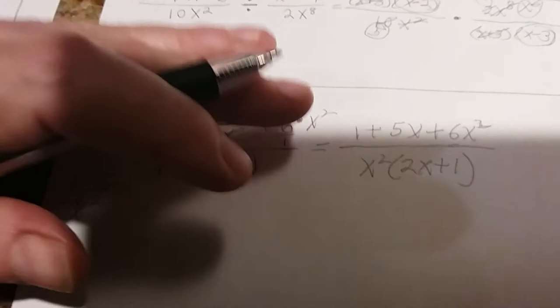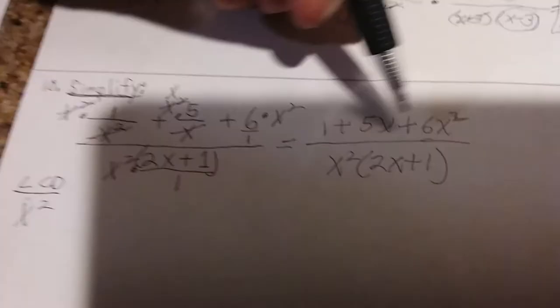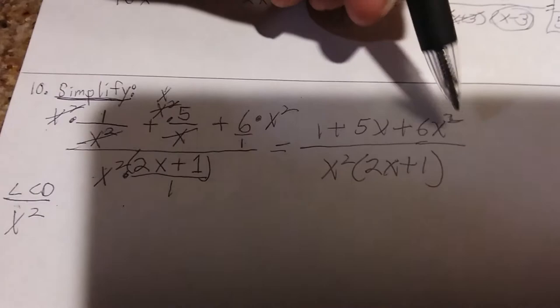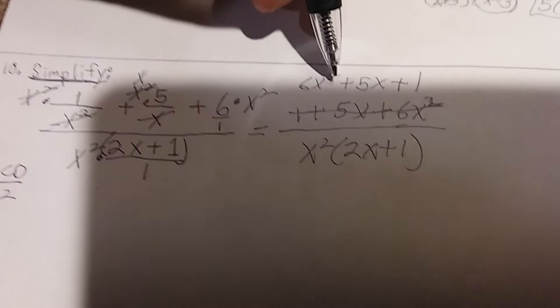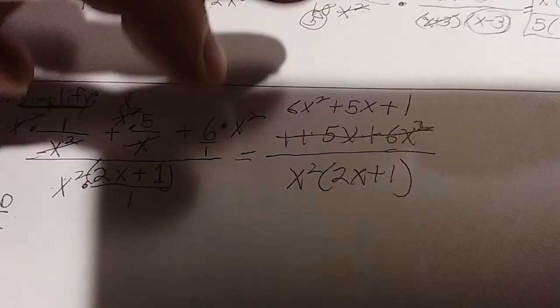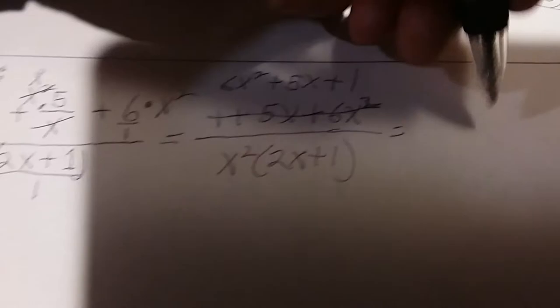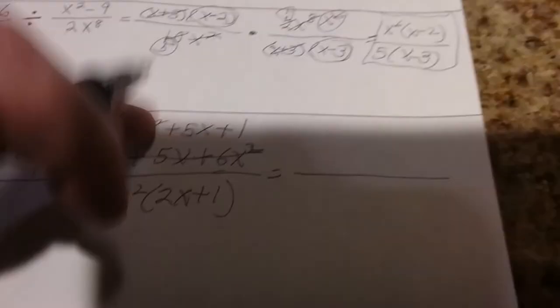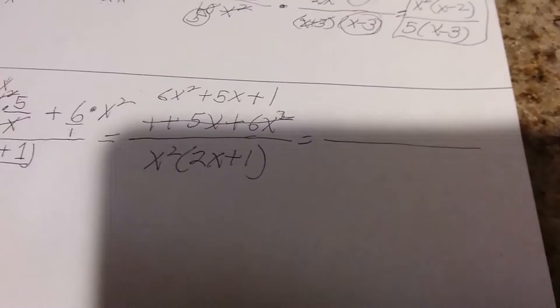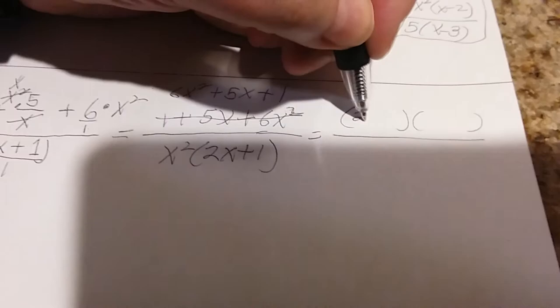Now a lot of people would write this answer and think they're done. You're not. You have to check to simplify. Now the first thing we're going to do is rewrite this in the proper order from the highest exponent to the lowest. So 6x squared plus 5x plus 1. The reason I did that is so that we could check to see if we could factor and possibly cancel with something down here. Now this is a trinomial. The only way you would cancel is if you turn this into binomials and it matches this binomial down here. If it doesn't, you can't cancel.